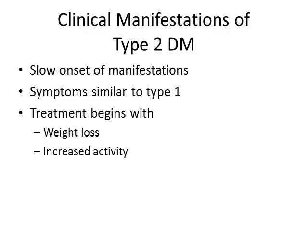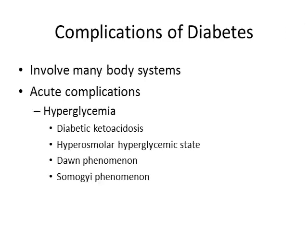As far as complications of diabetes, this piece can be very extensive — that's what makes it so expensive for our healthcare system. Some acute complications with hyperglycemia include diabetic ketoacidosis with Type 1, and hyperosmolar hyperglycemic state with Type 2, which we'll discuss in a moment.